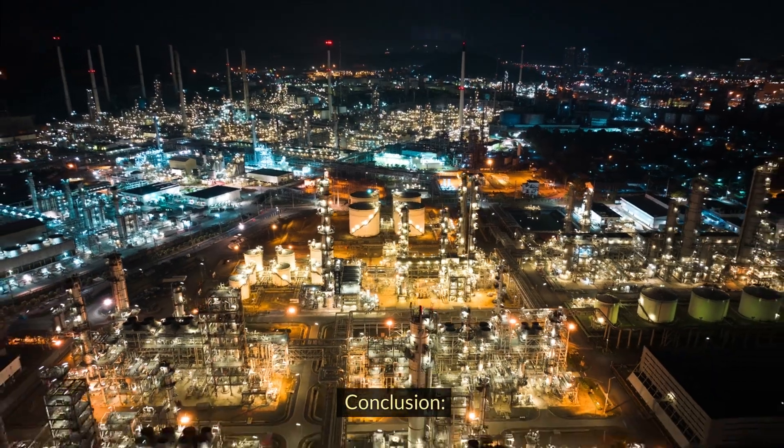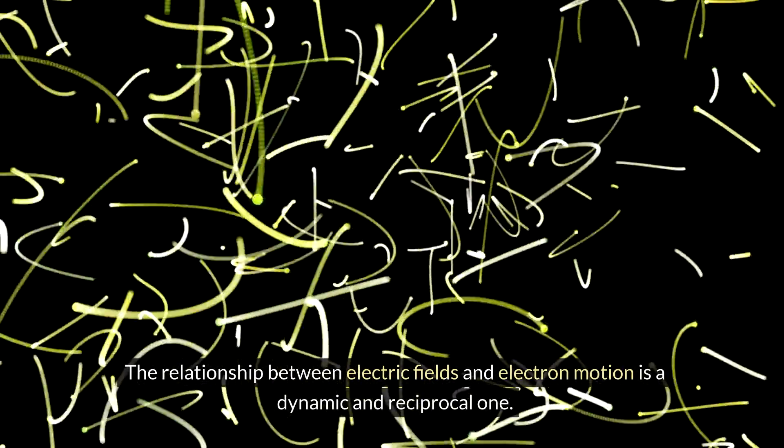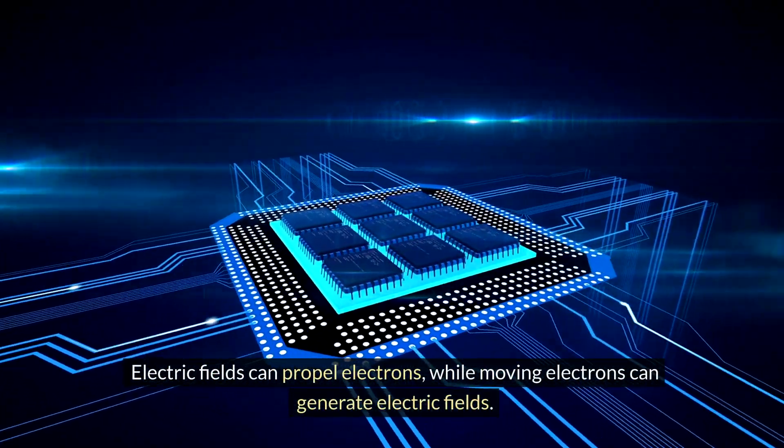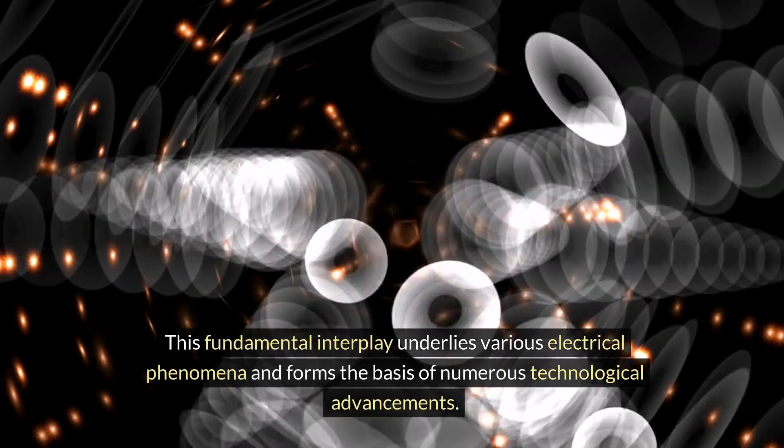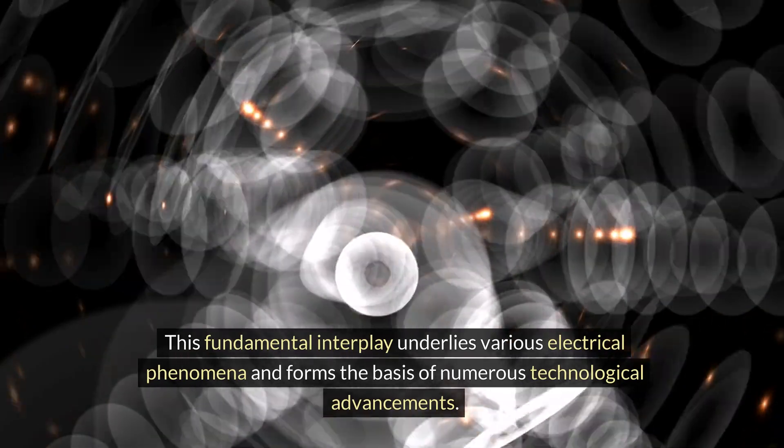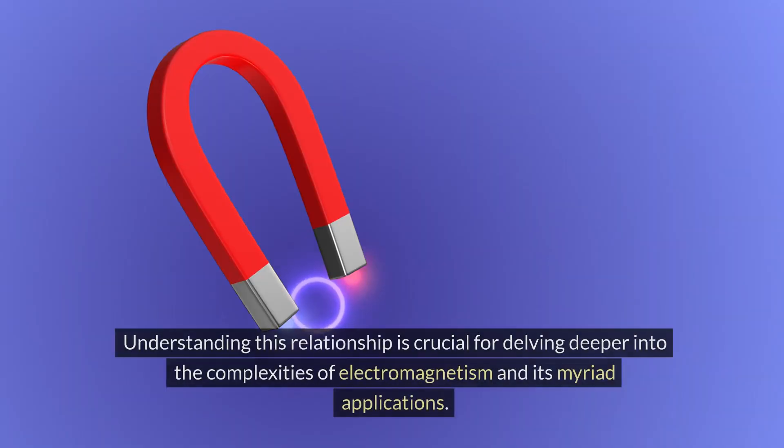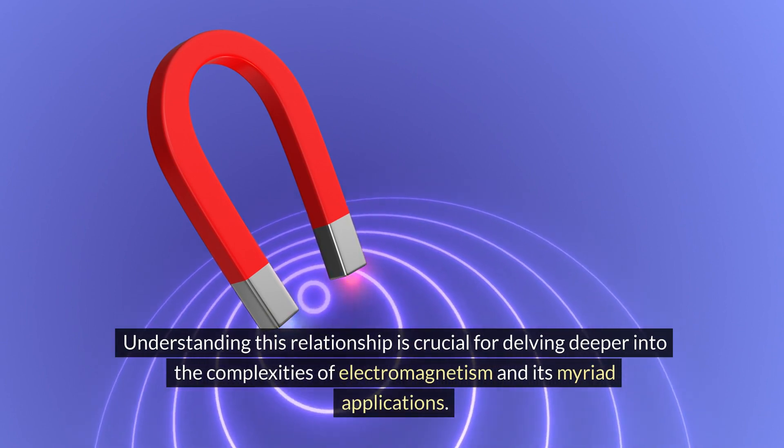Conclusion. The relationship between electric fields and electron motion is a dynamic and reciprocal one. Electric fields can propel electrons, while moving electrons can generate electric fields. This fundamental interplay underlies various electrical phenomena and forms the basis of numerous technological advancements. Understanding this relationship is crucial for delving deeper into the complexities of electromagnetism and its myriad applications.